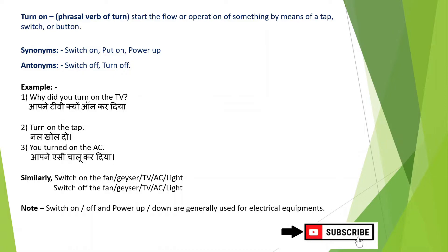Turn on the fan, the fan, geyser, TV, and lights. One more important thing here: switch on/off or power up and down are generally used for electrical equipment, not for things like taps. For taps, we use turn on or turn off. Turn on the tap, turn on the TV, but switch on, switch off are generally used for electrical equipment. Hope guys, this is clear for you.